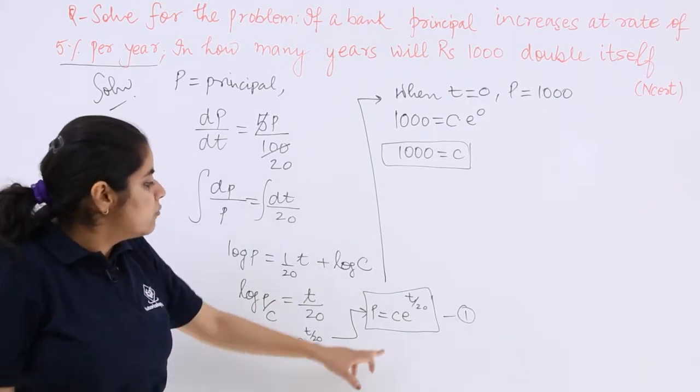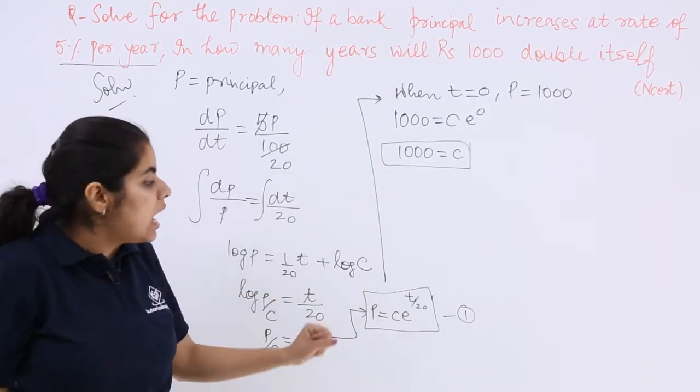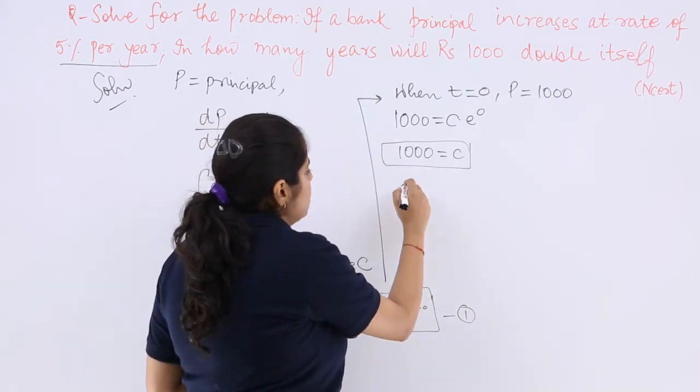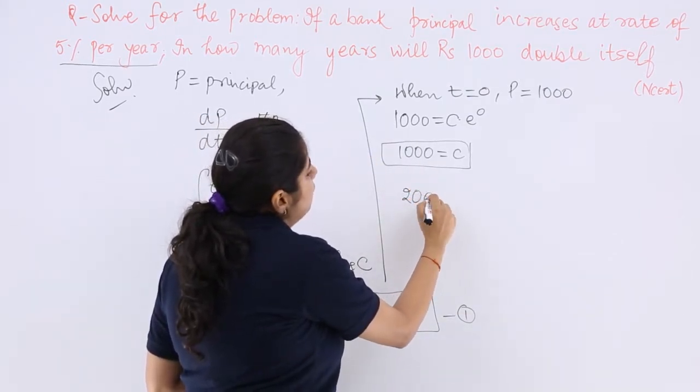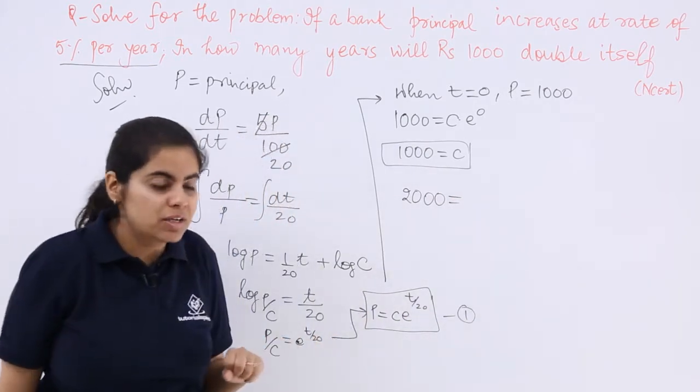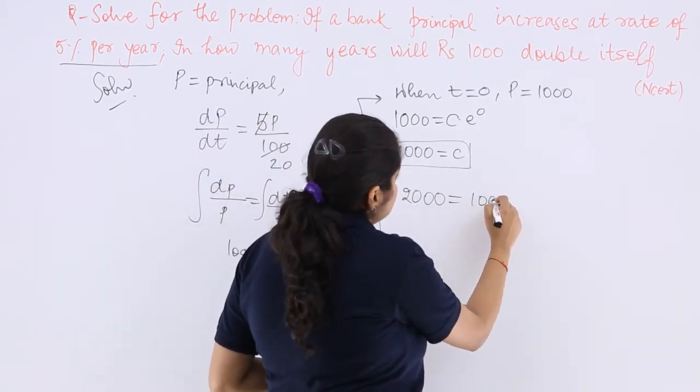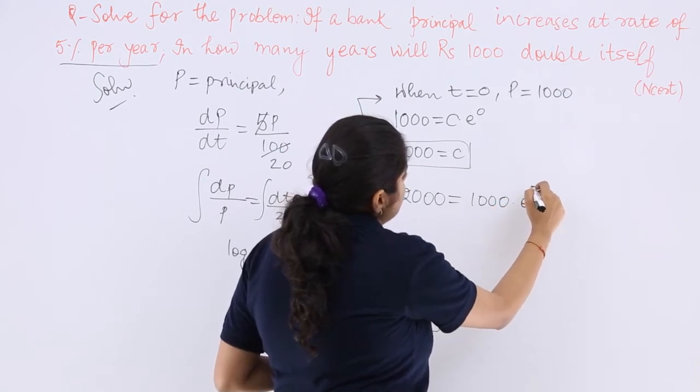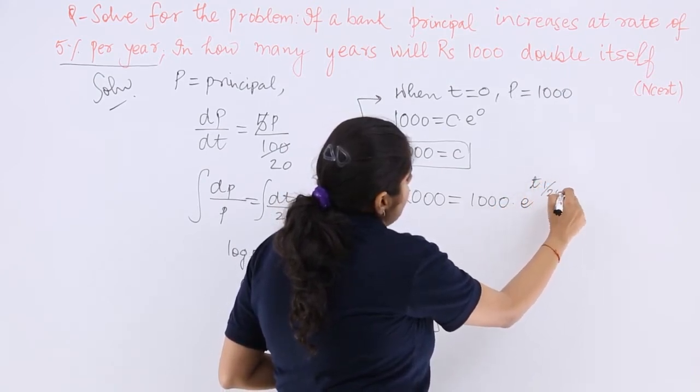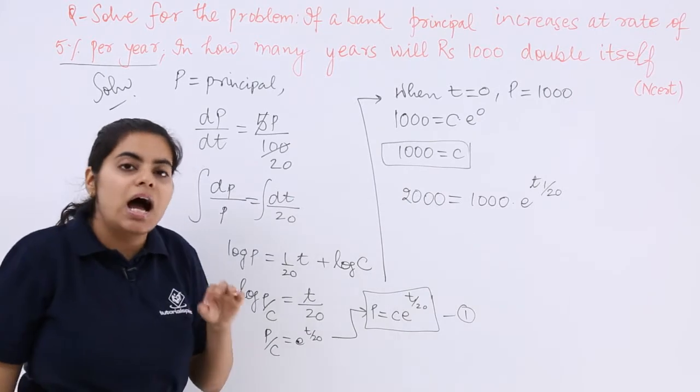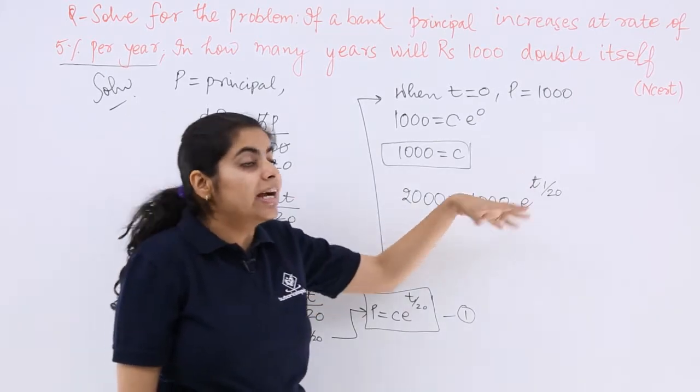The second thing, when I put it here, I also know another thing that I can make one more equation. That I have to double my principal. The first thing, the value of C is already there. Multiply by e, time is changed and this is again 20.